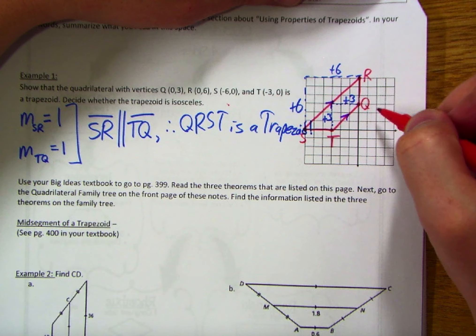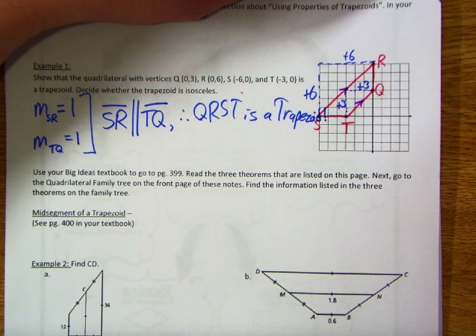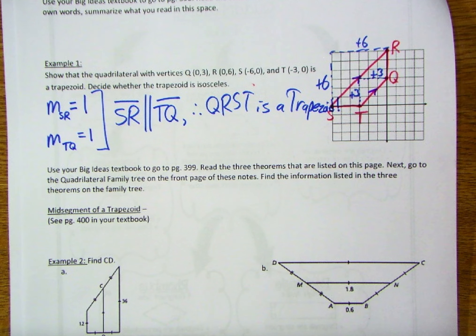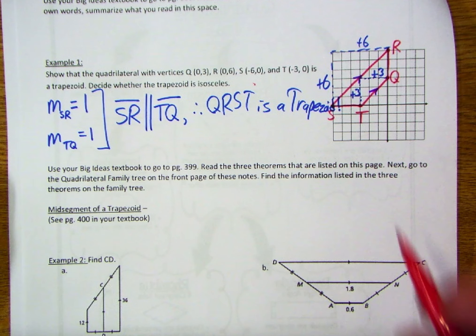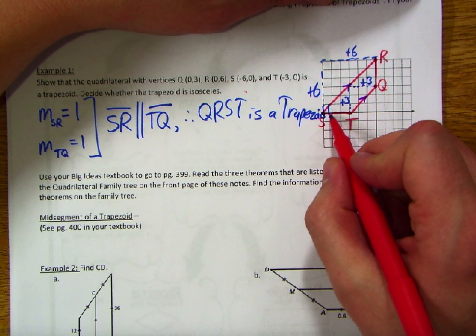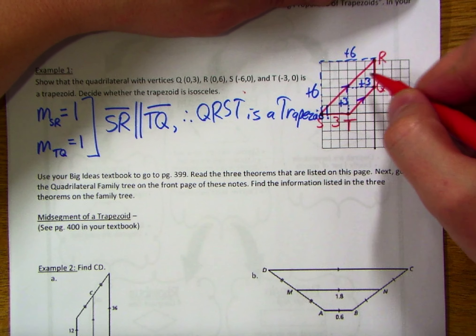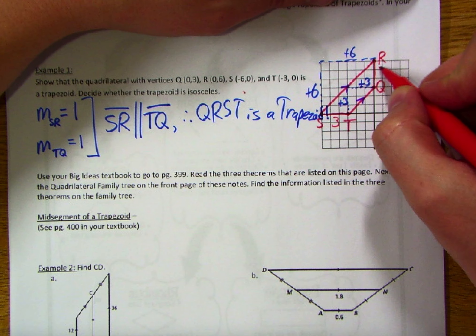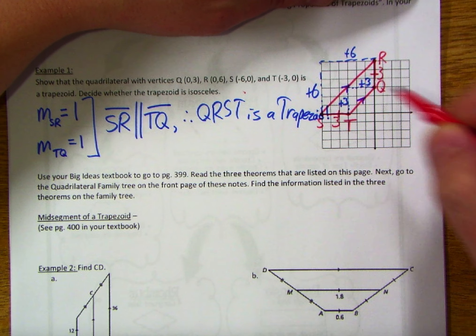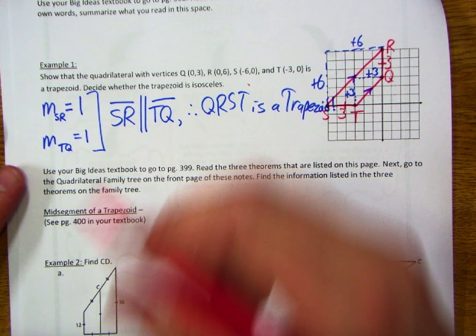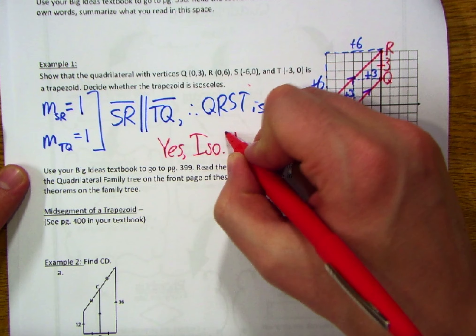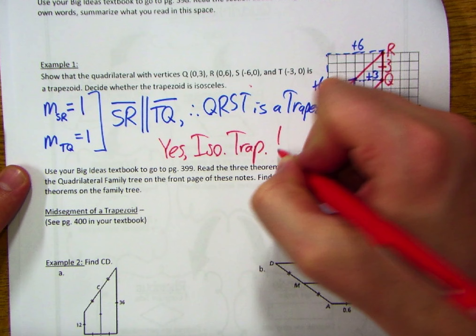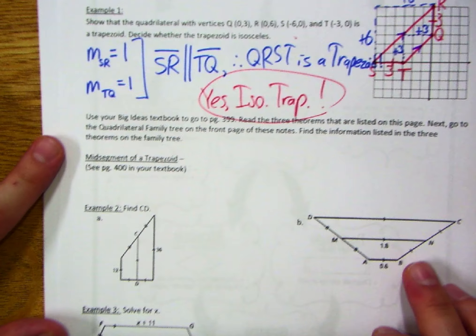If they were on a diagonal, we'd use the Pythagorean theorem or the distance formula. Counting across from S to T: 1, 2, 3 — three units. From R to Q: 1, 2, 3 — three units as well. So this is an isosceles trapezoid.